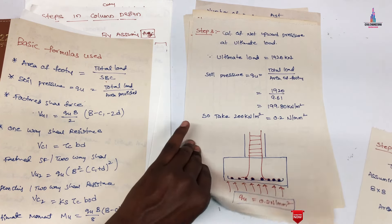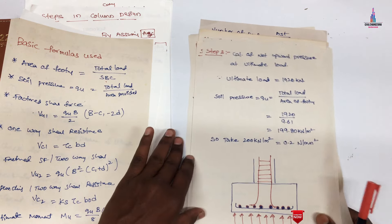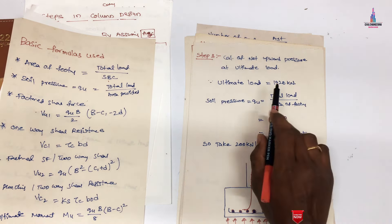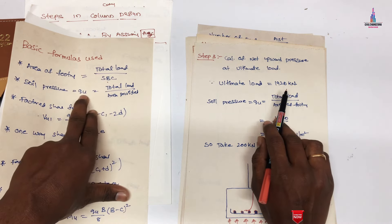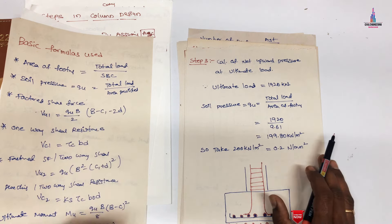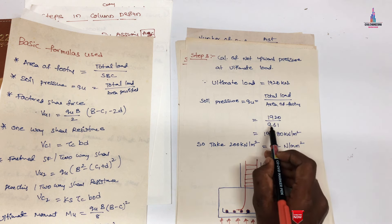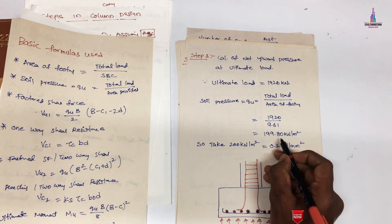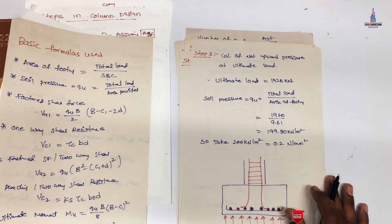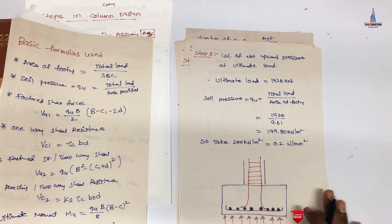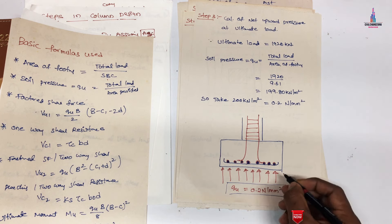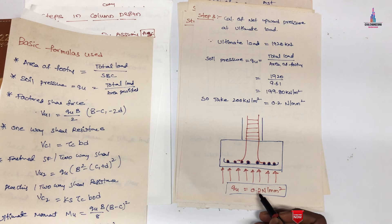Step 3 is the calculation of net upward pressure at ultimate load. The ultimate load is 1920 kN. Soil pressure qu = total load / area provided = 1920 / 9.61 ≈ 199.80 kN/m², taken as approximately 200 kN/m². Converting to N/mm², qu = 0.2 N/mm². This upward pressure qu acts on the isolated footing as shown in the diagram.